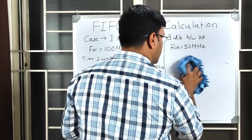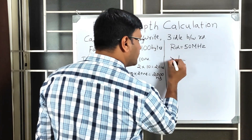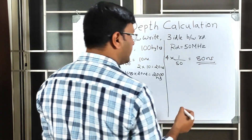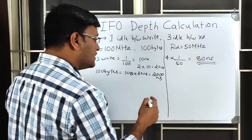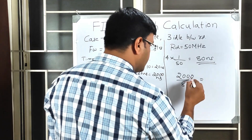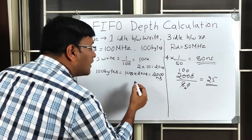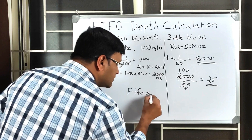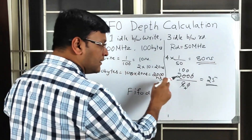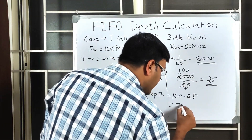For the read side: 1 / 50 MHz × 4 clock cycles = 80 nanoseconds per byte read. In 2000 nanoseconds, bytes read = 2000 / 80 = 25 bytes. So the FIFO depth = 100 − 25 = 75. You need a 75-deep FIFO to safely transfer data when there is one idle cycle between writes and three idle cycles between reads.